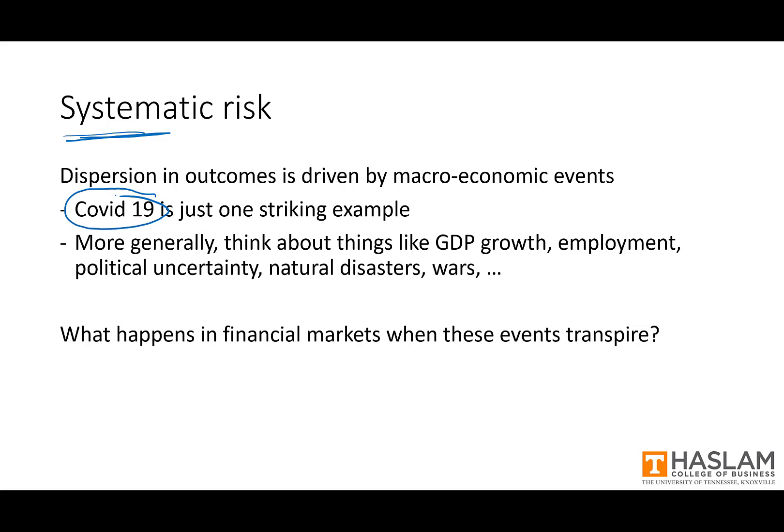COVID-19 affected everyone, everywhere. More generally, when we talk about systematic risk, think about things like GDP growth, employment, political uncertainty, natural disasters, wars, and so on. When these events transpire, many individual stock prices are going to move in the same direction. As a consequence, a portfolio of stocks — which is what the S&P 500 is — will move in that same direction as well, since the portfolio is just a collection of individual stocks.